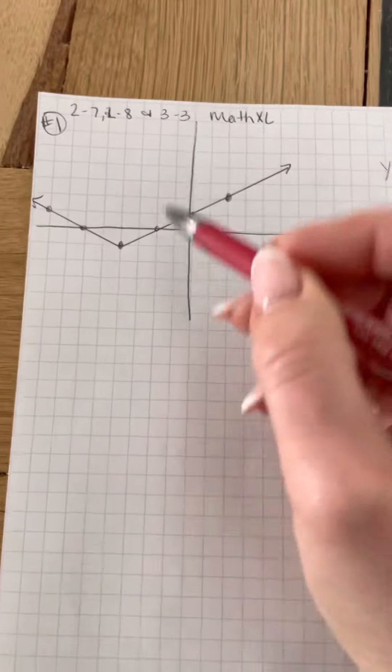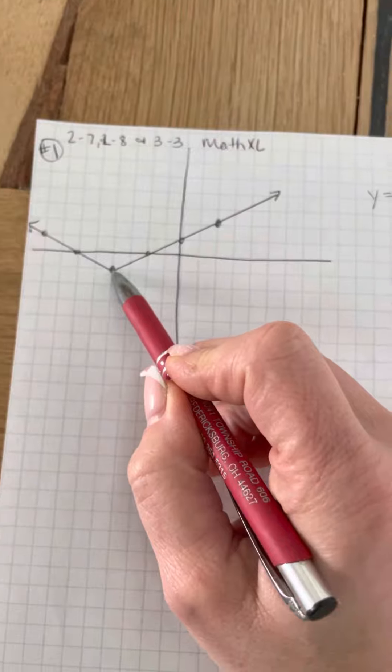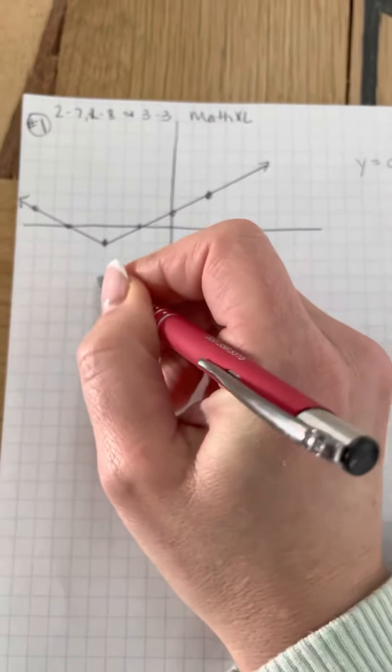So when you look at your graph, you're going to count your vertex, which is that starting point. So we're going to go back four, so that's negative four.